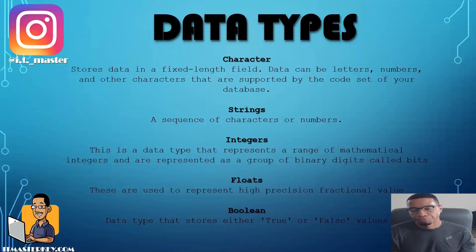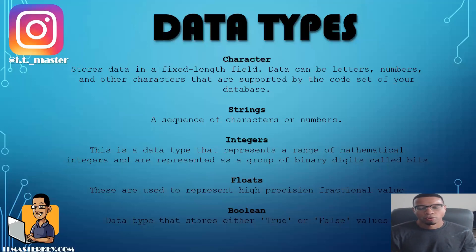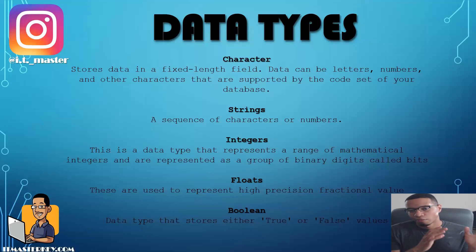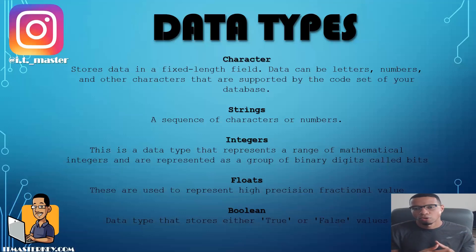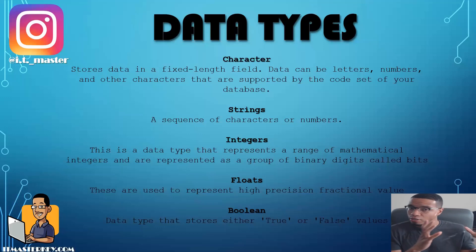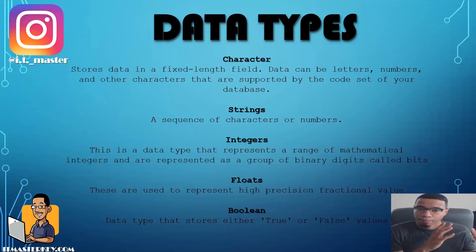So data types. The first data type is going to be character, or CHR. Characters are fixed-length fields. They can be letters, numbers, or other characters, as long as they're supported in whatever database you're using.